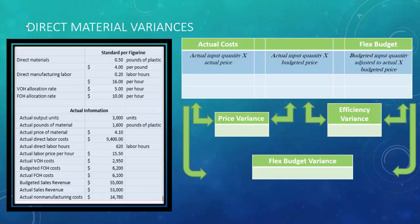For actual costs, take the actual input quantity times the actual price. The actual input quantity is 1,600 pounds times the actual price of $4.10, meaning we spent $6,560 obtaining plastic. In the middle no-name column, it is actual input quantity times budgeted price — 1,600 pounds times $4.00 — so we would have spent $6,400.